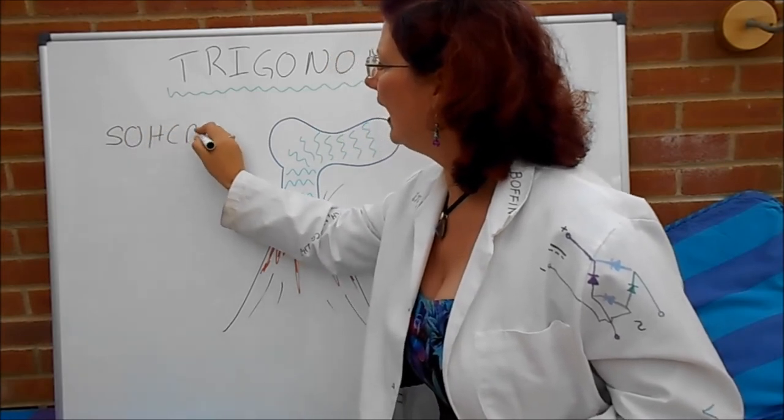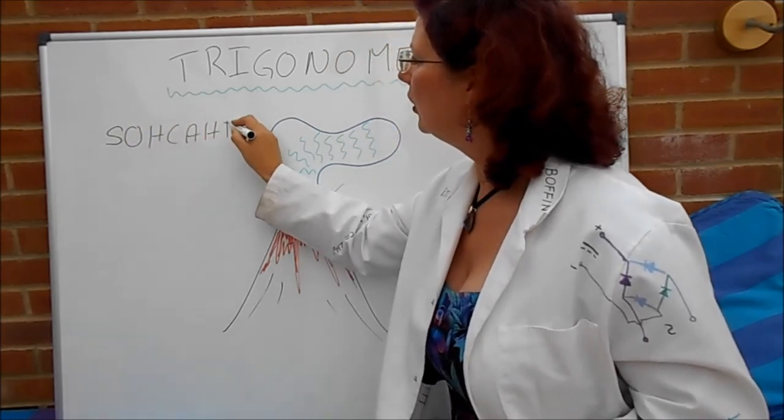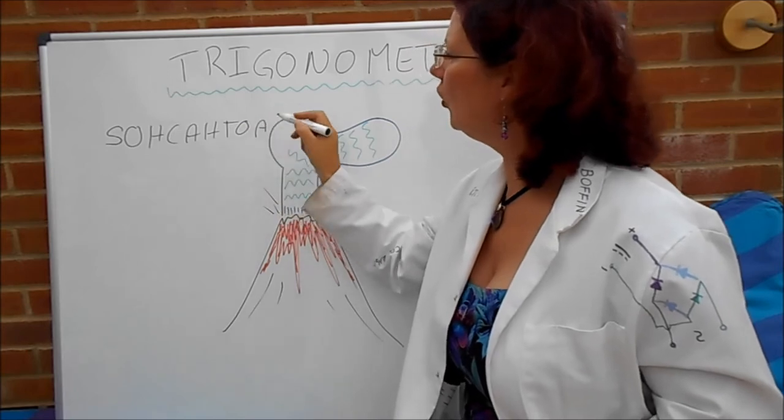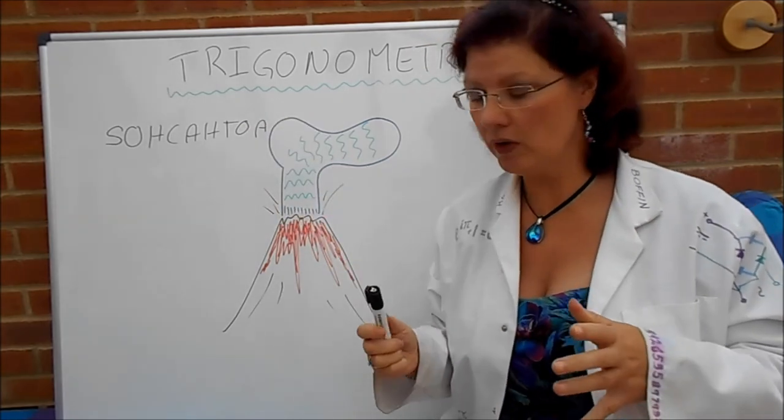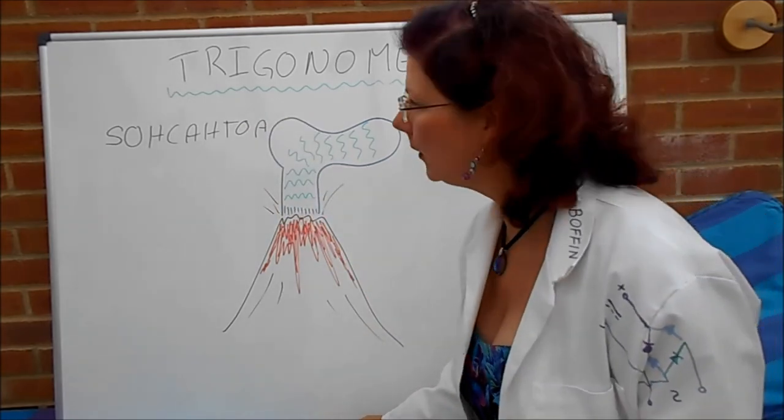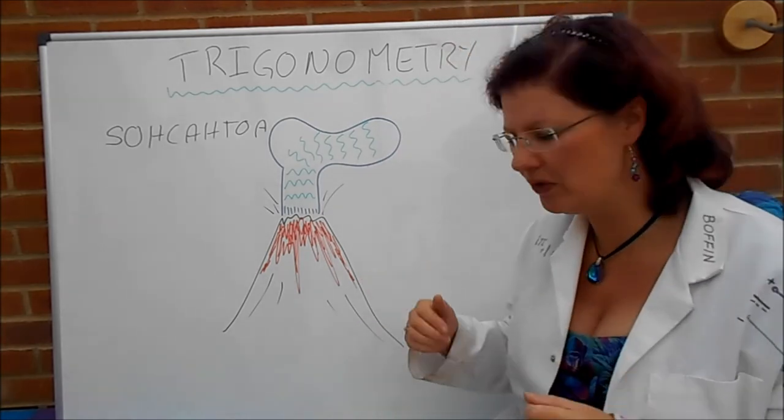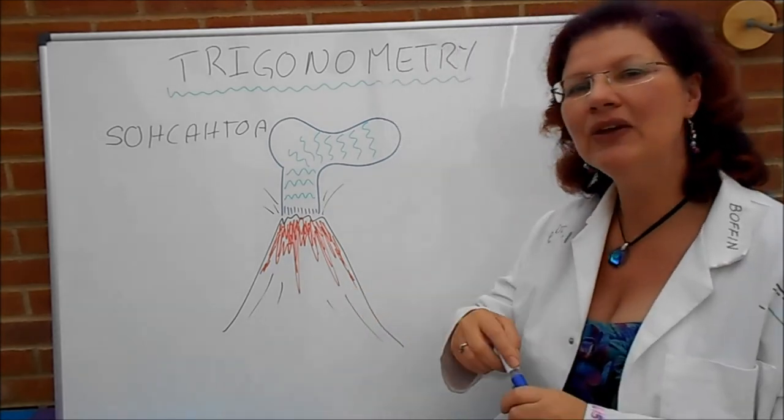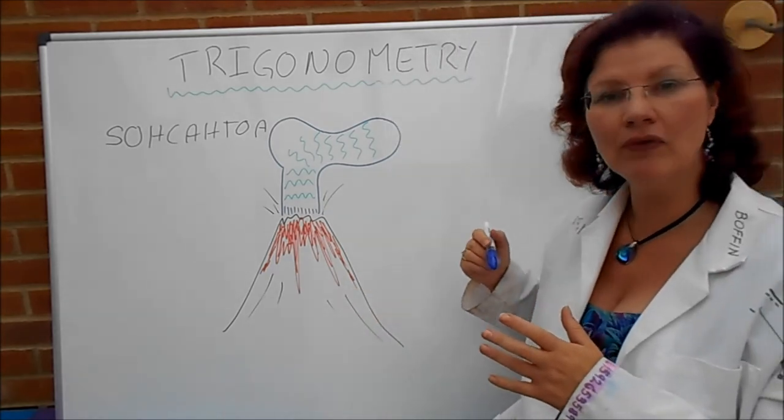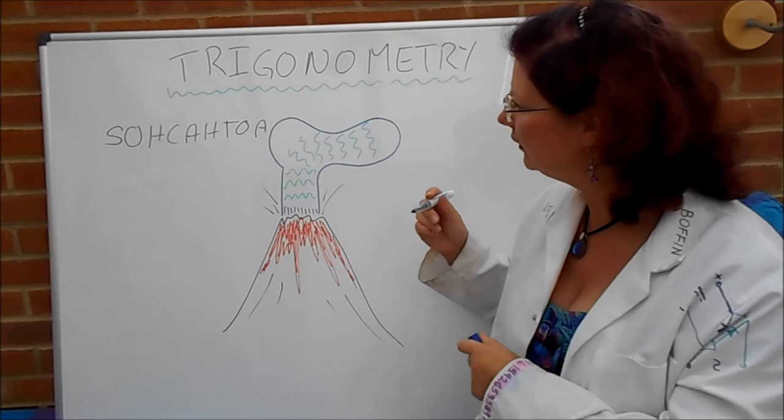Of Soh Ka Toa. SOHCAHTOA. It's like Krakatoa. But it's a sock. SOHCAHTOA. You're probably still thinking I'm mad here. Why on earth would you want to remember that? Well. Because it forms the initial letters of the formula triangles that we want. So here we go.